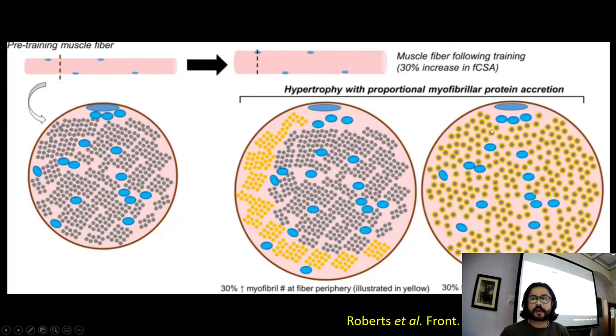Then we have another thing that's happening at the same time. We have the existing myofibrils. So these grey dots here, they enlarge in their size. So we have an increase in their size. So each kind of bundle or each myofilament is also increasing in diameter. So 30% thickening of pre-existing myofibrils.